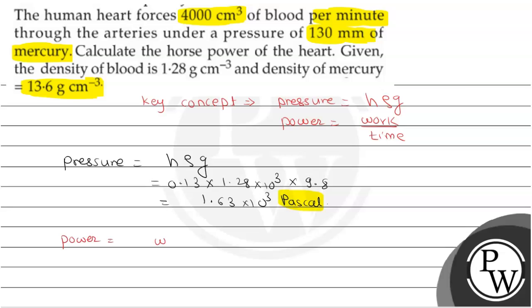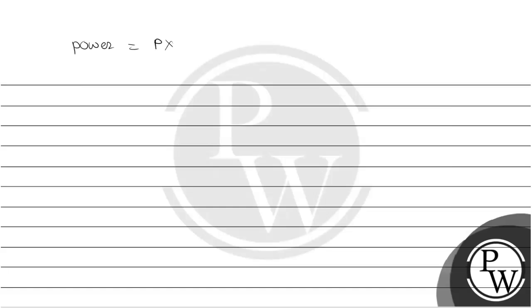Now we need to find power. Power equals work upon time. Work is force into displacement. Since force and displacement are in the same direction, cos theta is one. We rearrange: force by area times area times displacement upon time. Force per unit area is pressure, and area times displacement is volume. So power equals pressure into volume upon time.